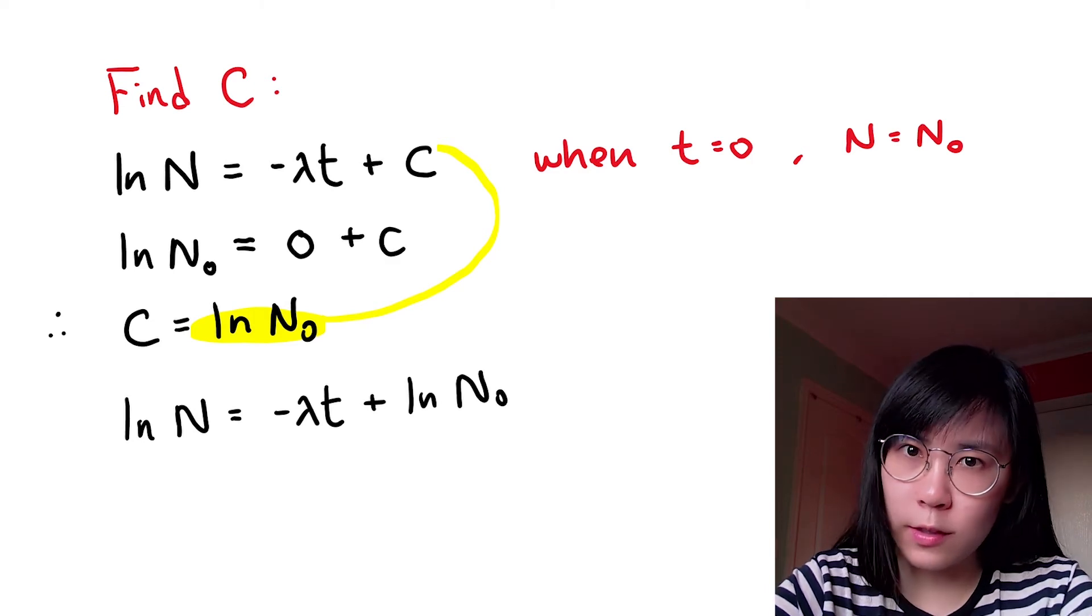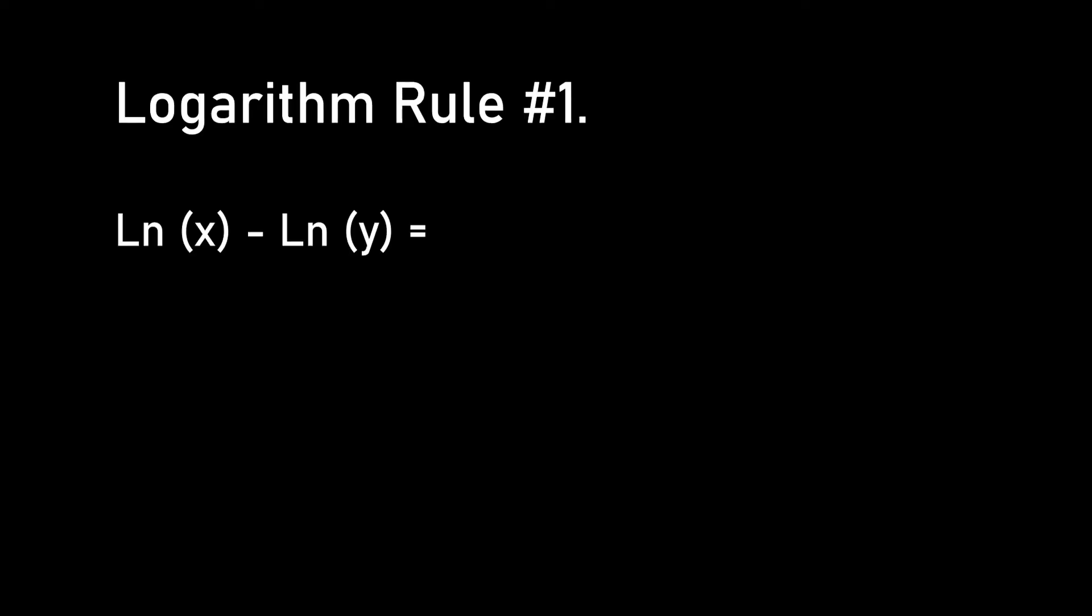But this doesn't quite look like our exponential equation just yet. Before we do the next step, I want to just remind you of two log rules. Rule number one: When you subtract two logs, that's the same as dividing one by the other. Rule number two: To undo a natural logarithm, apply the exponential function.